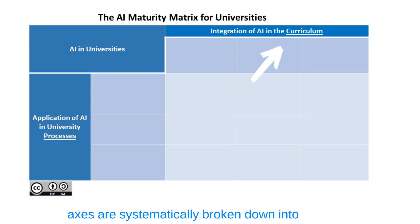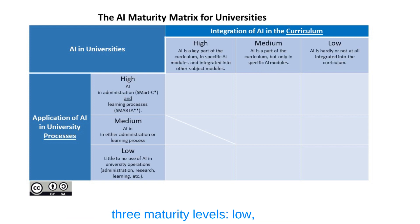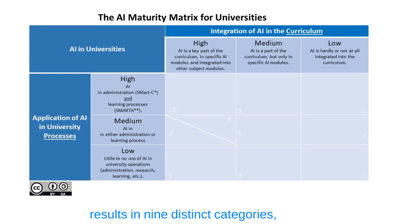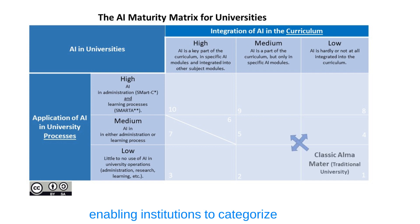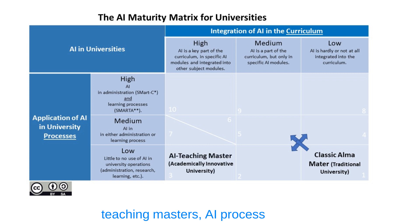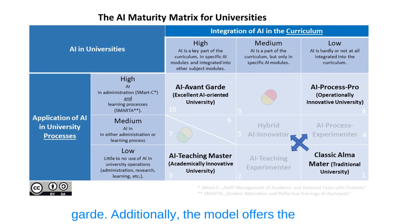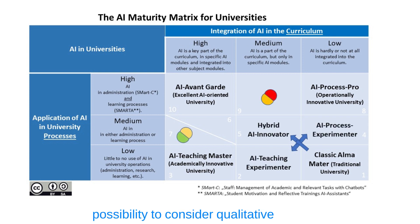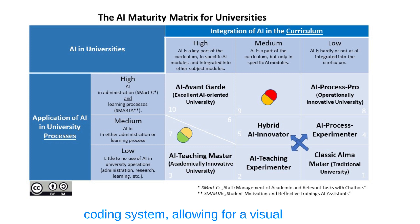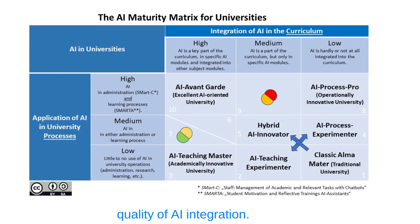These axes are systematically broken down into three maturity levels — low, medium, and high. This division results in nine distinct categories, enabling institutions to categorize themselves as, for example, AI Teaching Masters, AI Process Experts, or members of the AI Avant-Garde. Additionally, the model offers the possibility to consider qualitative assessments through a traffic-light color-coding system, allowing for a visual representation of the effectiveness and quality of AI integration.